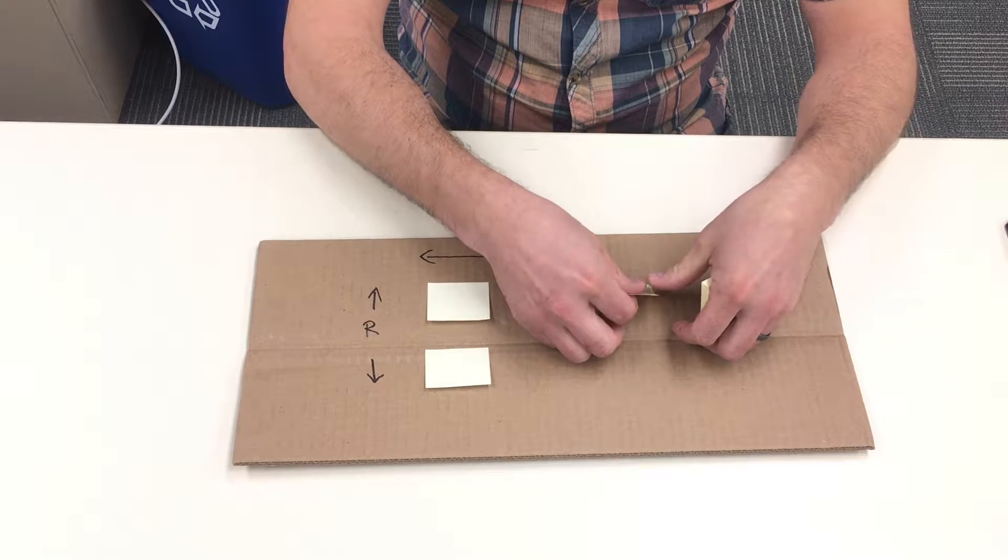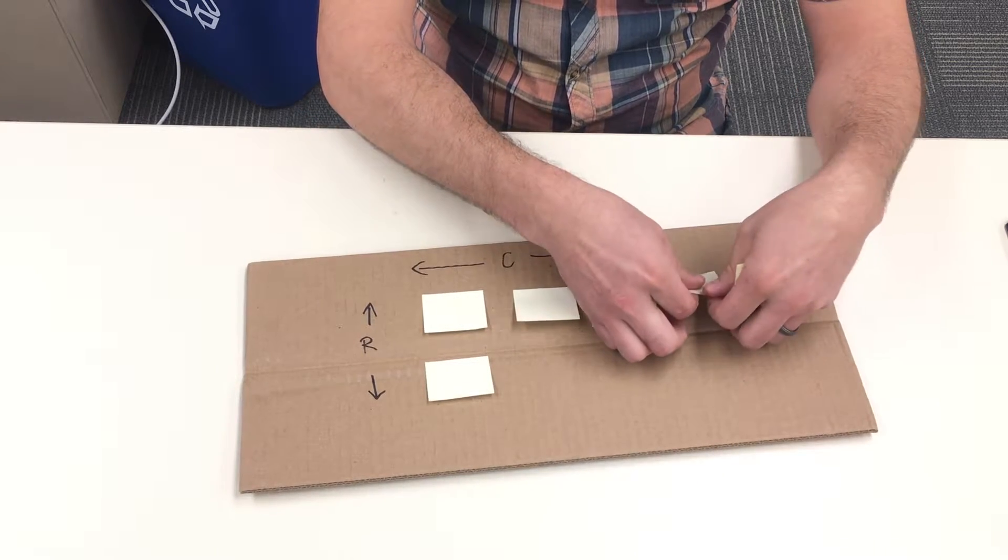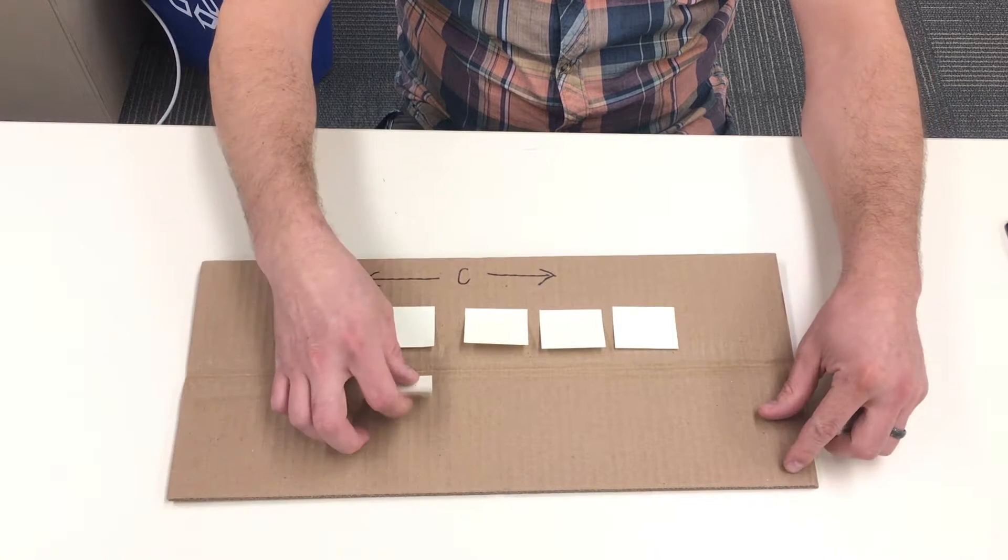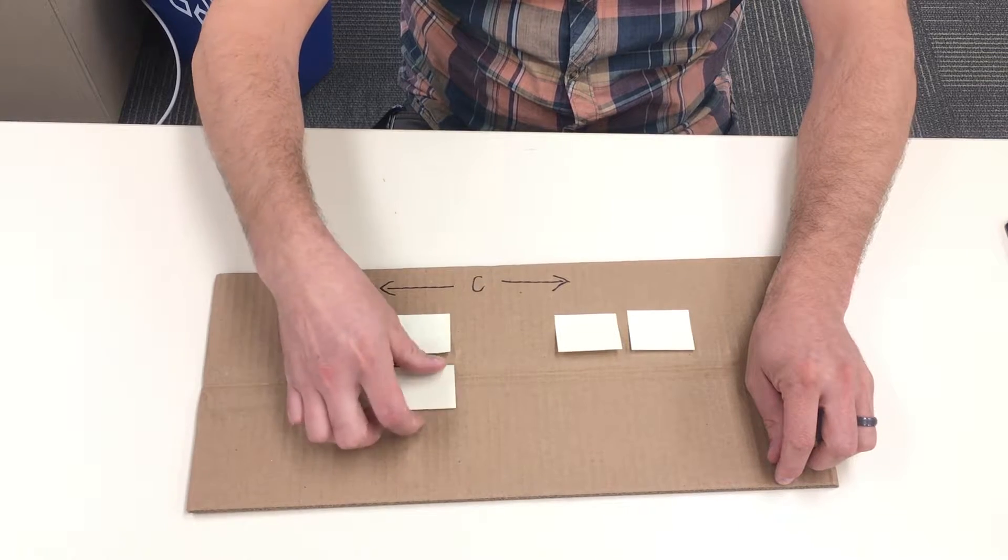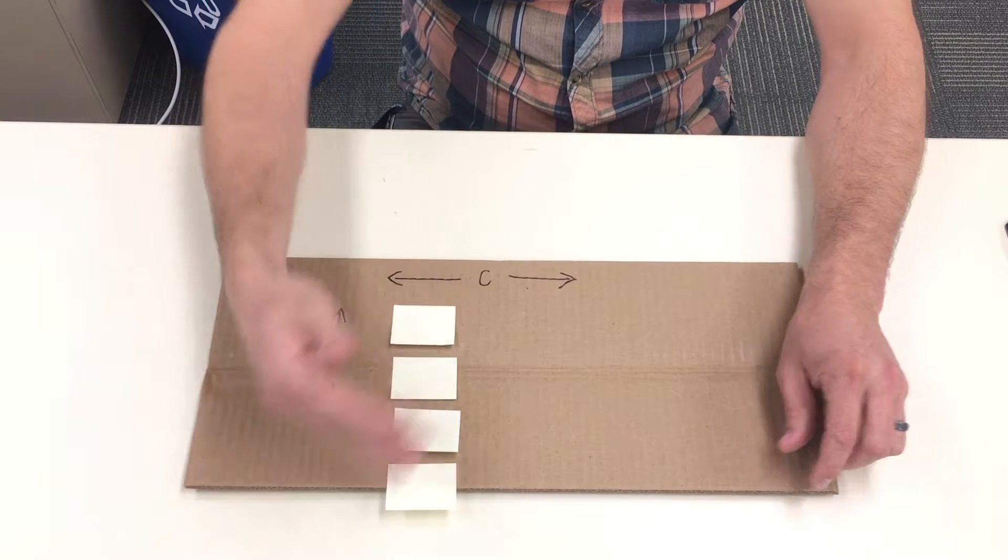So what some students do is they have four images they're wanting to submit. But instead of saying I have four columns and one row, they say I have four rows and one column. So then their images end up like this where they have those four rows and one column and they don't want it to look like that.